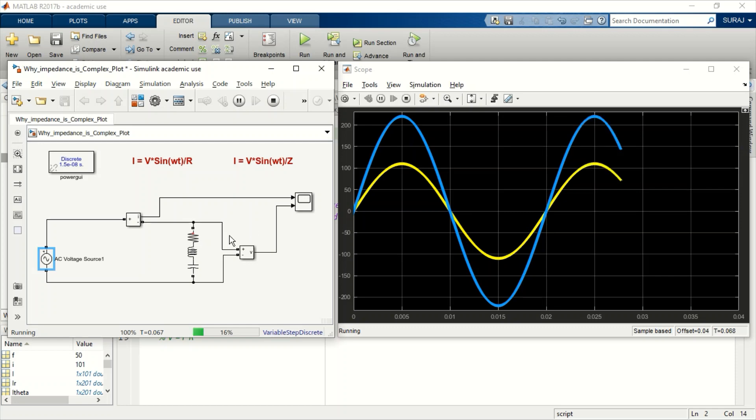As expected, the resistance is not shifting the phase of current from voltage, it is just changing its magnitude. If we plot this on a polar plot, we know that both quantities will be on the real axis.